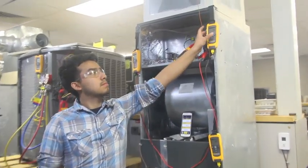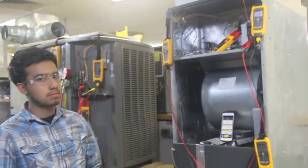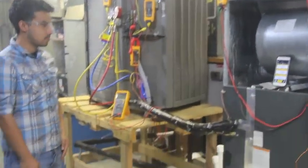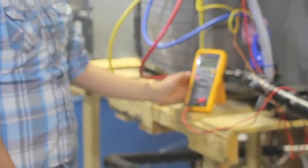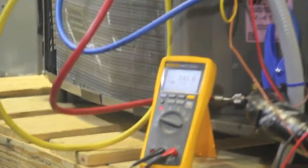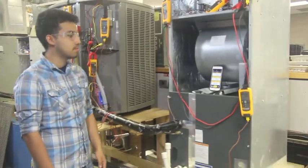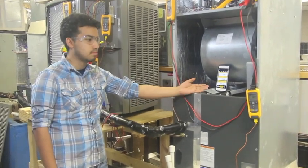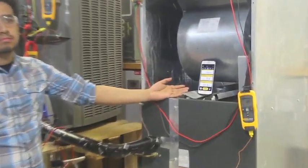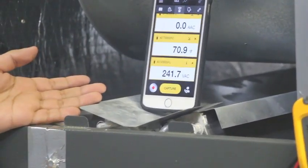With Bluetooth capability, we can read ambient temperature and voltage at the condensing unit. All data comes back to the iPhone and we can read all values in one location.